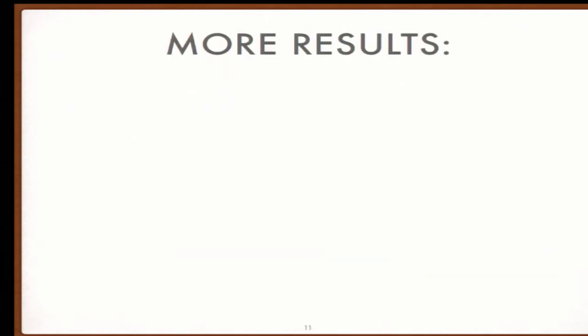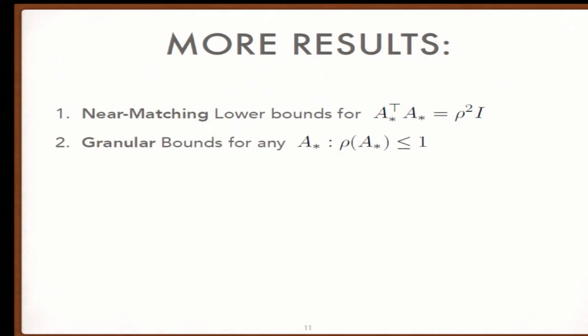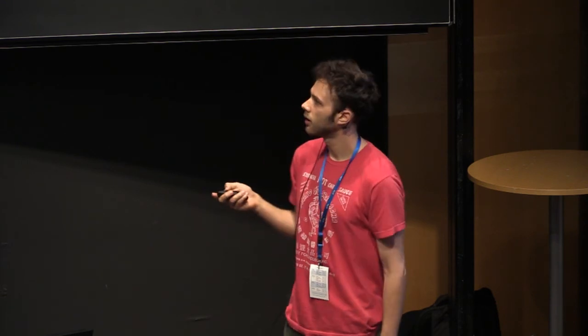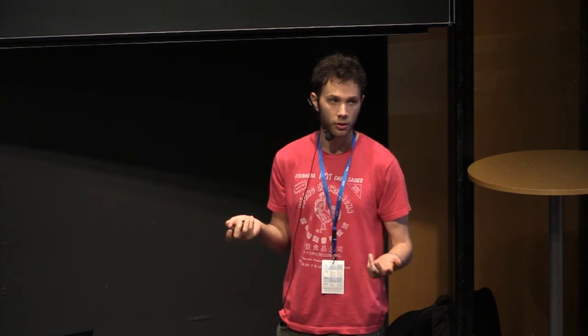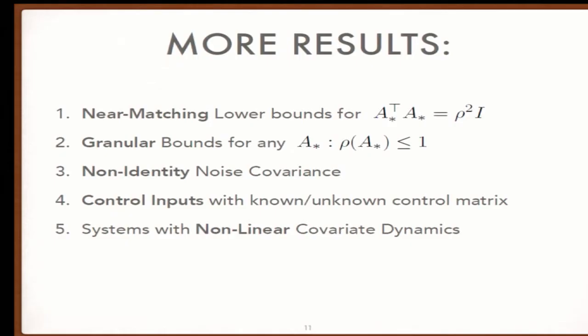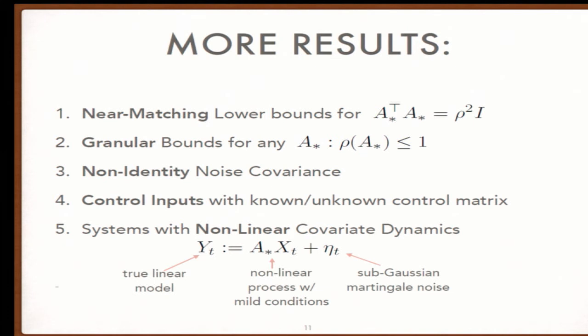We have more results: near-matching lower bounds for that special case, granular bounds for any matrix with spectral radius strictly less than one, generalization to non-identity covariance structures, control inputs with known or unknown control matrix. Our results apply to arbitrary time series regression of the form Y_t equals A star X_t plus noise, where we have a true linear model and sub-Gaussian noise, as long as X star satisfies a generalization of the small ball property.